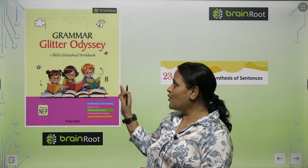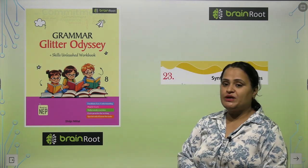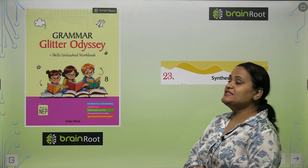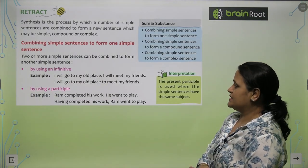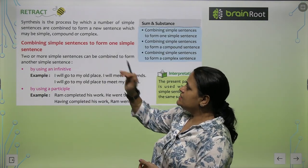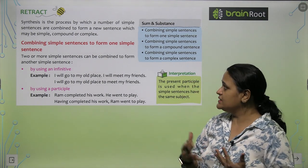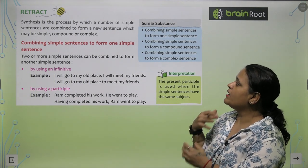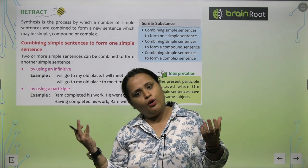Hello children, today we are here with your own book Grammar Glitter Odyssey by Brainroot from Amit Publishing House, and we are on chapter number 23, Synthesis of Sentences. Synthesis is the process by which a number of simple sentences are combined to form a new sentence, which may be simple, compound or complex.